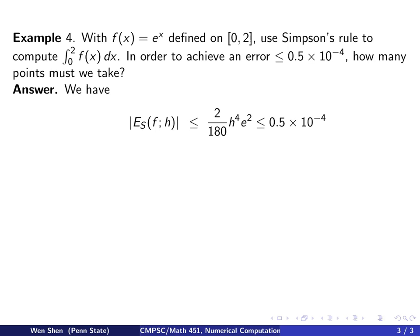So, the error estimate we just had for Simpson's rule. And what we put in here is the fourth derivative of f, which is e to the x. And the max value on 0, 2 is just e square. So, we have this error bound. Now, it must be bounded by the requirement. Then, it will be guaranteed that the error is less than the requirement.